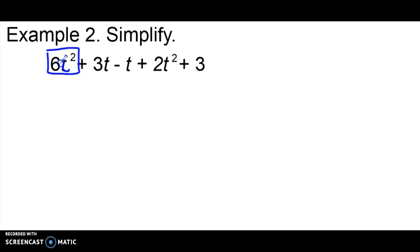So I'm going to start with my first term which is 6t squared and I'm going to look to see if there are any other terms that have a t squared or a t to the second power. When I go down, I don't see another one until I get to the positive 2t squared. So I'm also going to put a box around that. There are no more like terms to t squared or t to the second power.